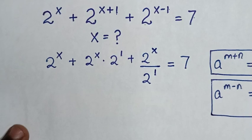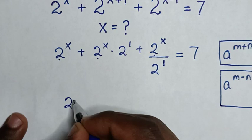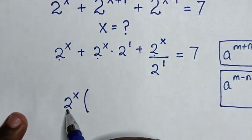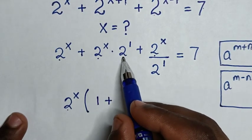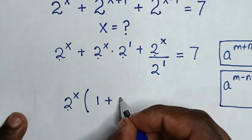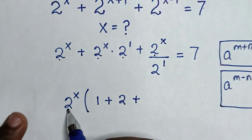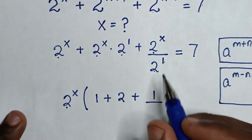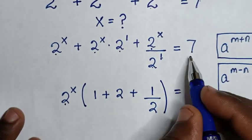Then in the next step, 2 power of x is common. So we will take 2 power of x out of the bracket. Then 2 power of x divided by 2 power of x is 1, plus 2 power of x times 2 power of 1 divided by 2 power of x is 2 power of 1, which is same as 2.